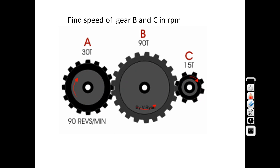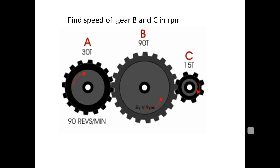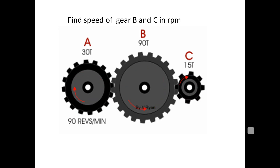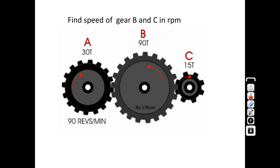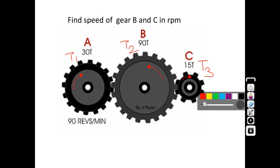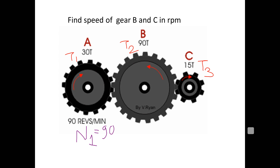A simple gear train is formed when more than two gears are connected serially. Consider a first numerical: a simple gear train with three gears A, B, C where t₁ = 30, t₂ = 90, t₃ = 15. The speed of gear A is n₁ = 90 rpm. Using the formula n₁·t₁ = n₂·t₂ = n₃·t₃, find n₂ and n₃.